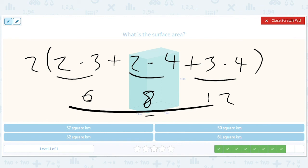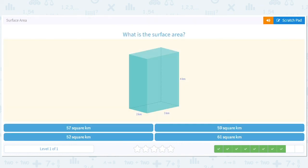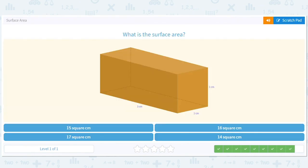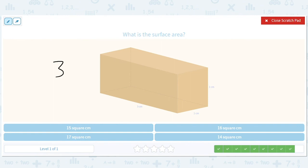All right, and here we go. 3, 1, 1. So 3 times 1 plus 3 times 1 plus 1 times 1, all times 2. This gives us 2 times 3 plus 3 plus 1. That's 3 plus 3 plus 1 is 7, so that should give us 14 square centimeters.